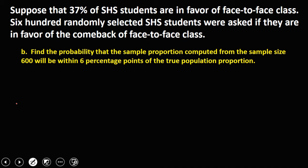Next, find the probability that the sample proportion computed from sample size 600 will be within 6 percentage points of the true population proportion. Since 'within' means between, we compute 0.37 minus 0.06 = 0.31 and 0.37 plus 0.06 = 0.43, giving the interval (0.31, 0.43).